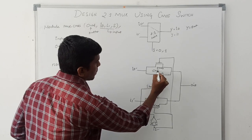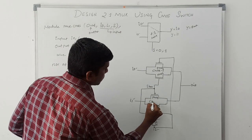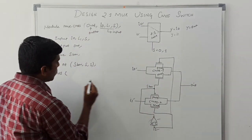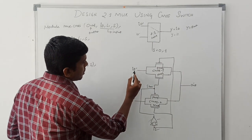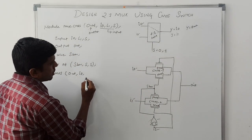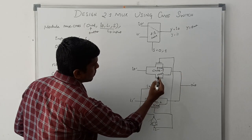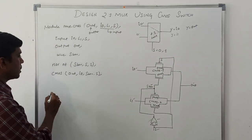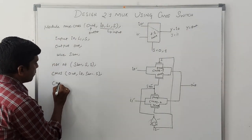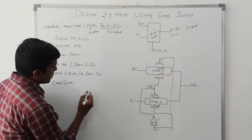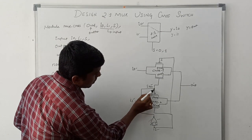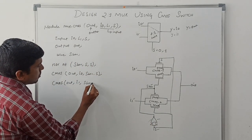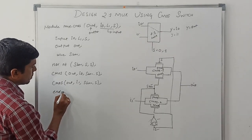Then come to CMOS switch 1 and CMOS switch 2. For CMOS switch 1, the output is 'out', input is I0, and we need two control signals: S_bar and S. For CMOS switch 2, the output is 'out', input is I1, and the two control signals are S_bar — connected to PMOS — and S — connected to NMOS. Finally, close the module with 'endmodule'.